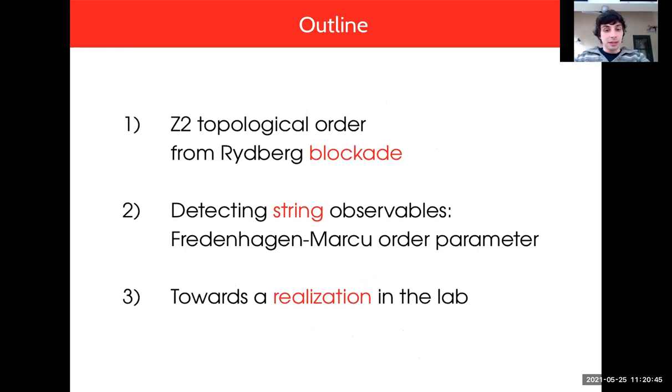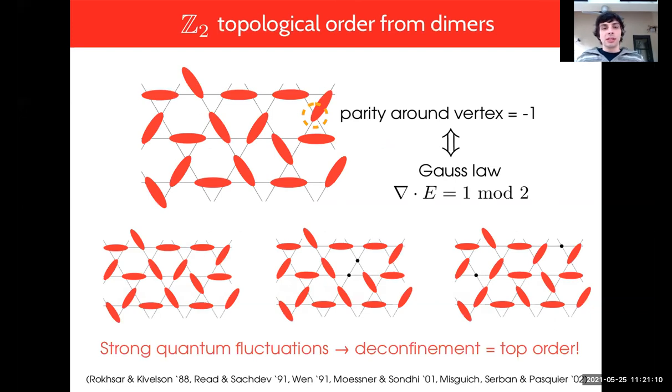Secondly, aside from just realizing a phase, you also want to know how to detect it. In these engineered quantum systems you can even measure non-local observables which gives us access to something called the Fredenhagen-Marcu order parameter. Then lastly I'll show some experimental data on the system.